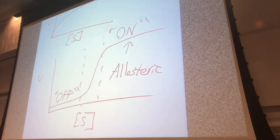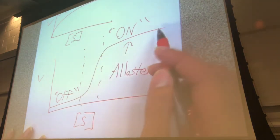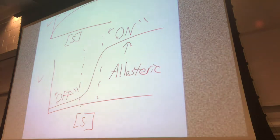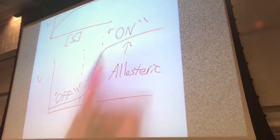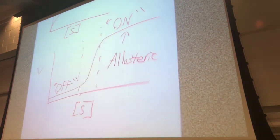This allows allosteric enzymes to be closely regulated. If the substrate is present, it's most likely going to shift to maximum speed to process that substrate as fast as possible. And if the substrate isn't present, the enzyme is most likely going to be off — why waste energy if there's no substrate to be processed.